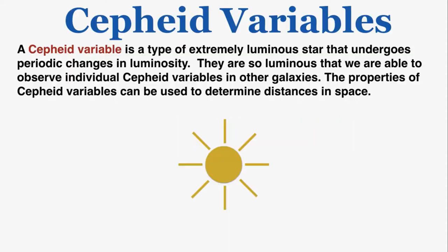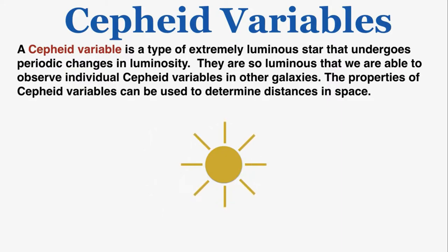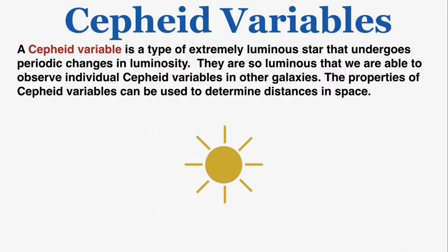This lecture is about Cepheid variables and how they're used to find distances in space. A Cepheid variable is a type of extremely luminous star that undergoes periodic changes in luminosity — it's a variable star. They're so luminous that we're able to observe individual Cepheid variables in other galaxies, and their properties can be used to determine distances in space.